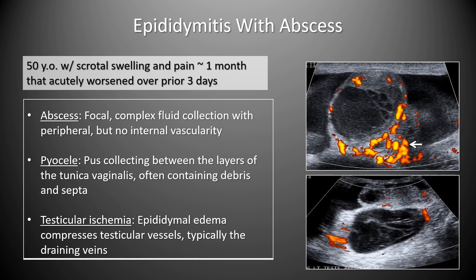A 50-year-old with scrotal swelling and pain for a month that acutely worsened showed a complex collection with an enlarged epididymal head containing internal septa and low-level echoes consistent with debris. There was surrounding hyperemia and complex fluid with internal echoes surrounding the epididymis — epididymitis progressed to abscess, seen as a focal complex fluid collection with peripheral but no internal vascularity. Complications include pyocele — pus between the layers of the tunica vaginalis — and testicular ischemia from epididymal edema compressing testicular veins.